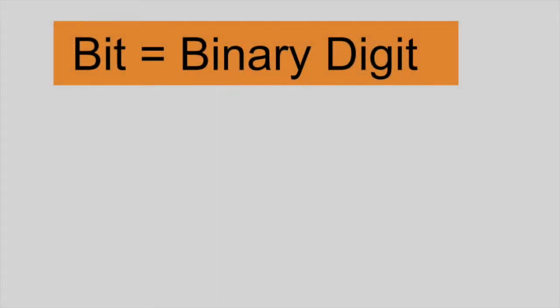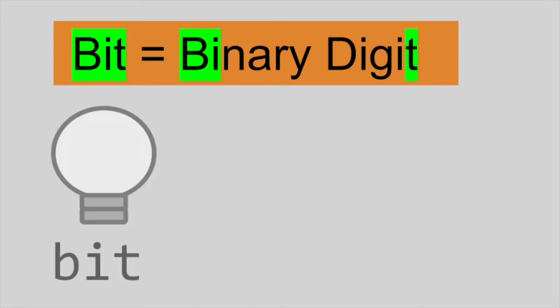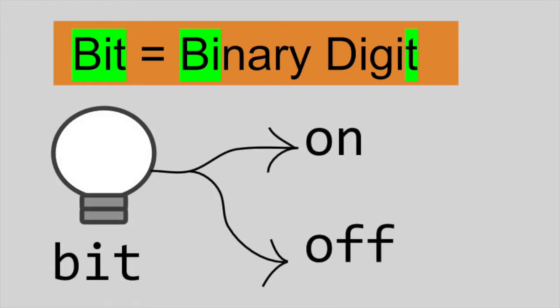The smallest unit of data in a computer is the bit. The word bit is short for binary digit. Like a light bulb, a bit could be one of two states, on or off.